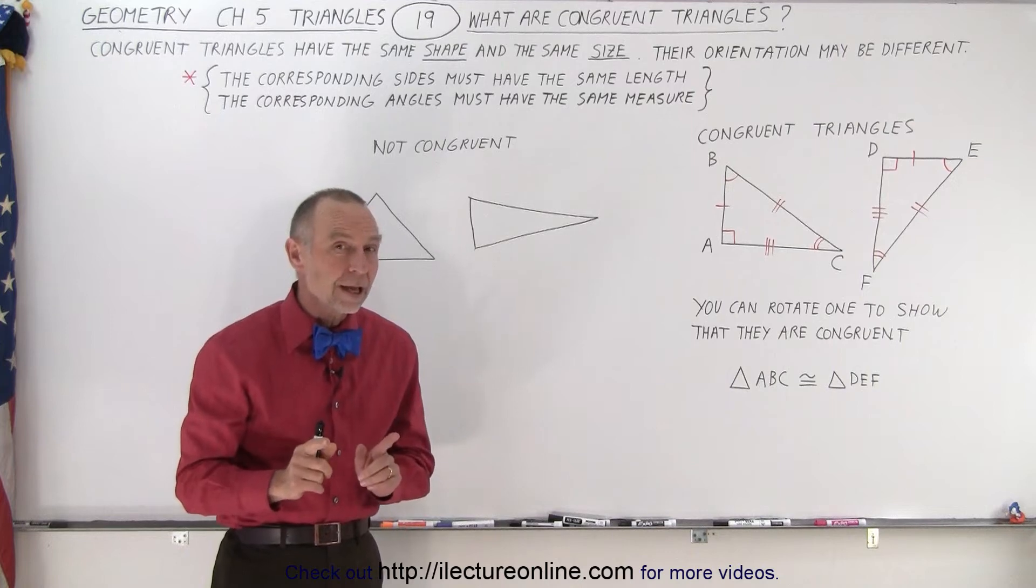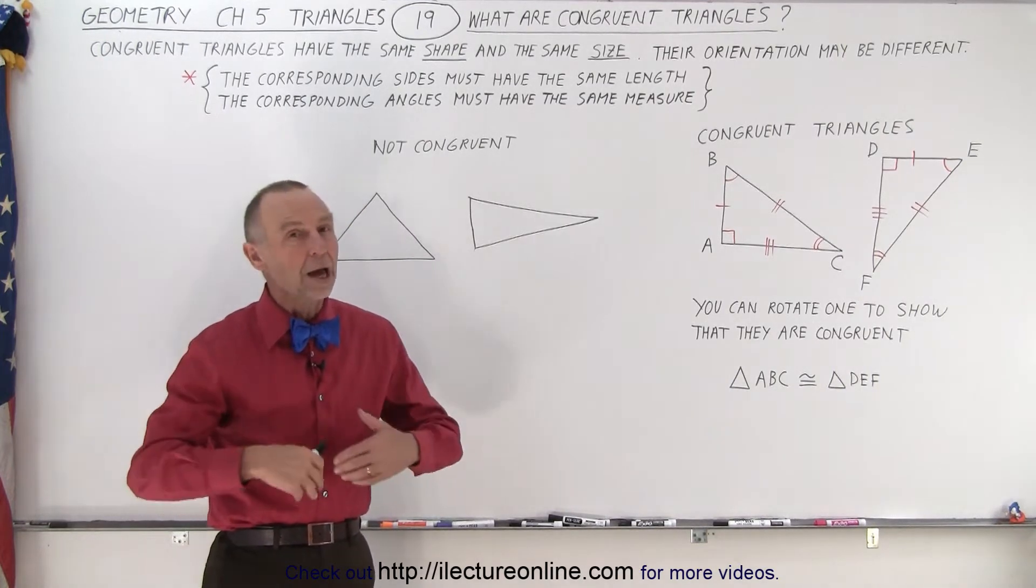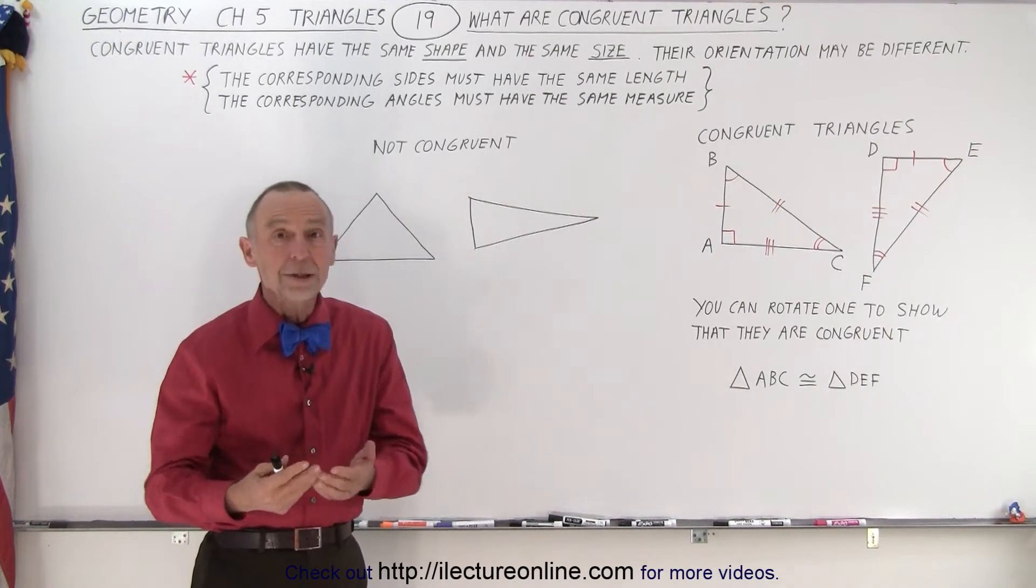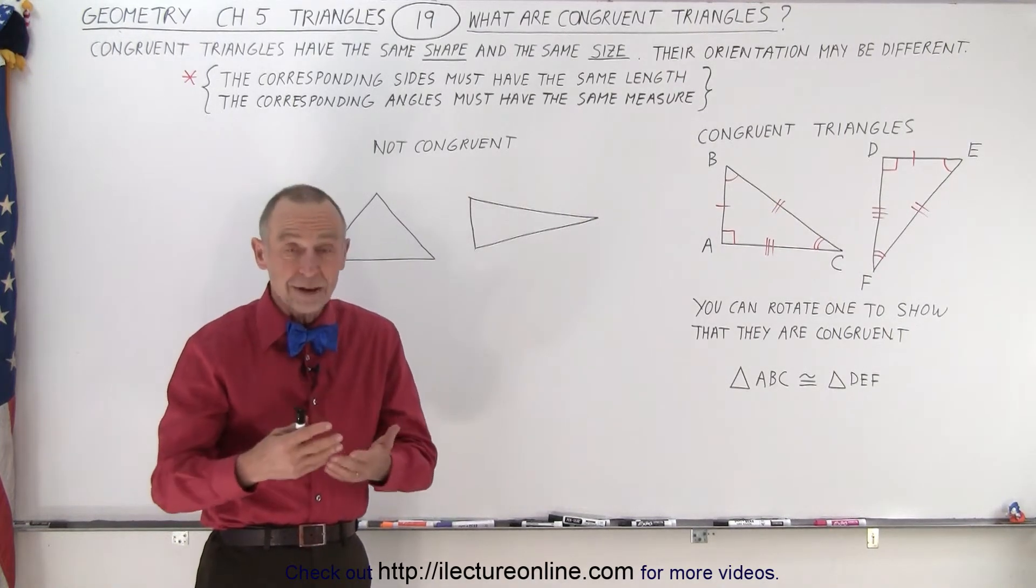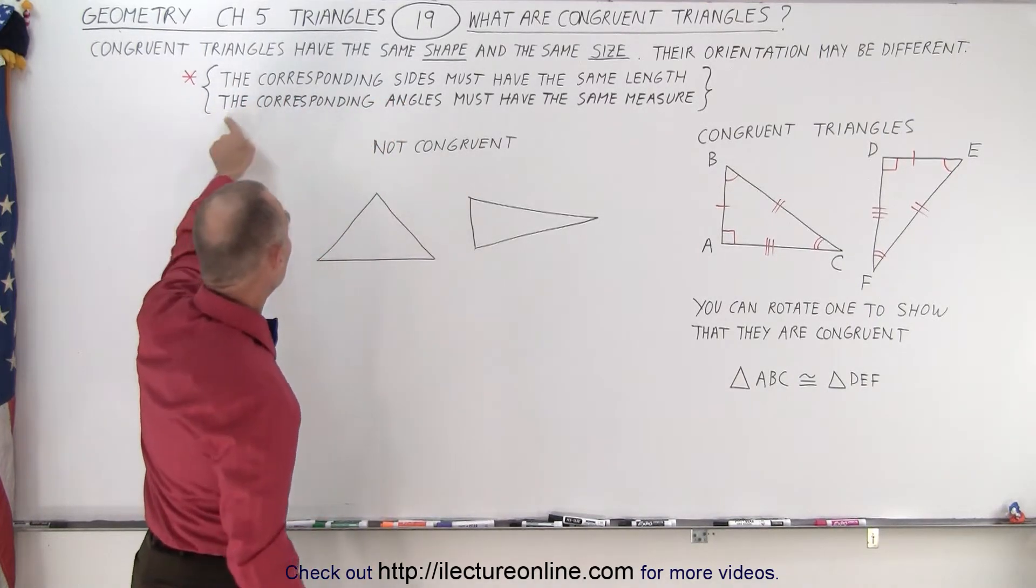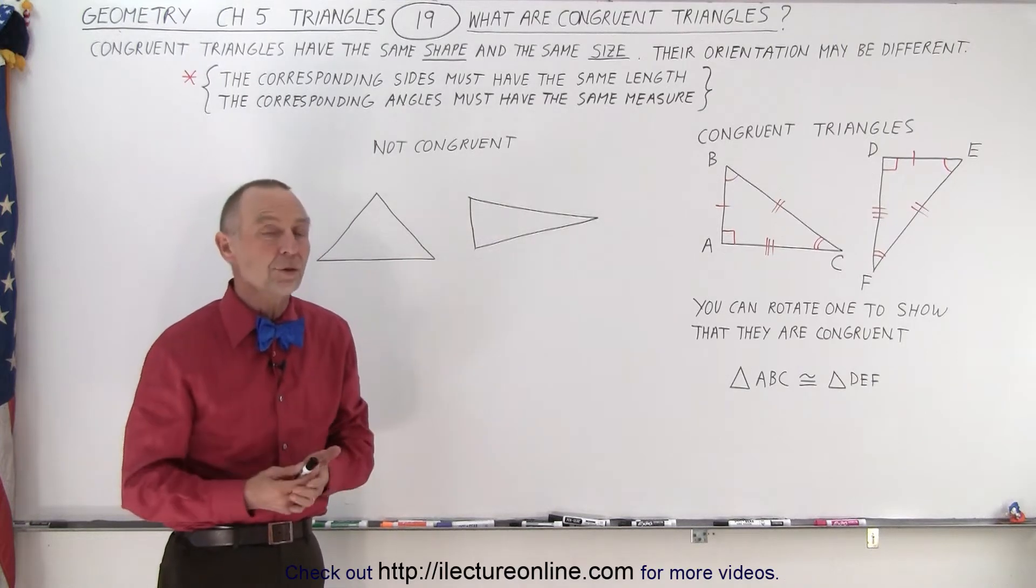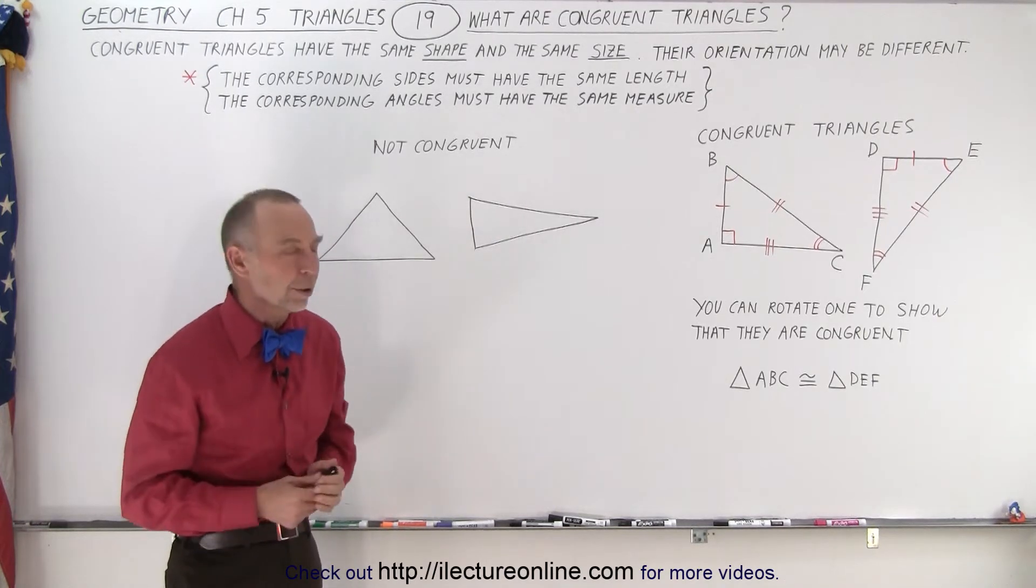However, if the corresponding sides have the same length, that will automatically translate to the corresponding angles having the same measure. So this is a necessary condition, and then this will be an automatic following condition, but both of them will be true if the triangles are congruent.